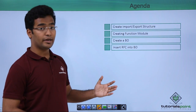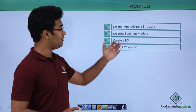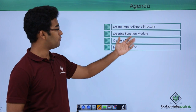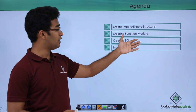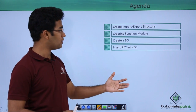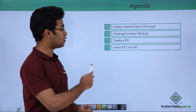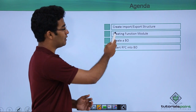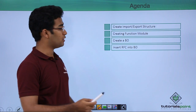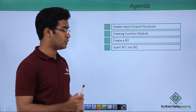First we will create our importing and exporting structures and we will make use of those structures in our function modules. We will enable these function modules as remote function modules, then we will also create our business objects, and afterwards we will insert our remote function modules into our BOs, that is business objects.